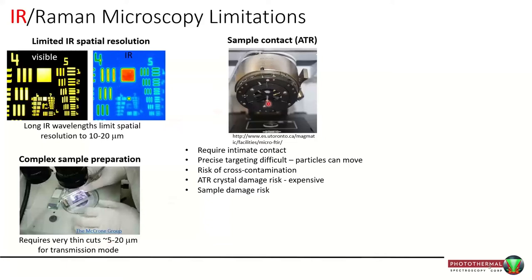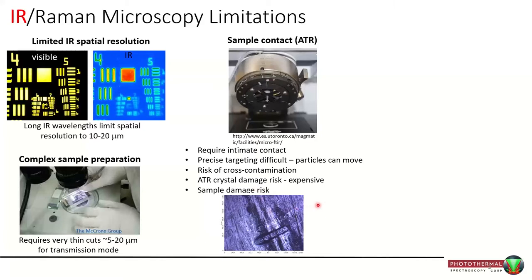The ATR accessory goes some way to addressing some of these issues, but it requires intimate contact, precise targeting is difficult, and if you have particles, touching them with the crystal can make them move. There's risk of cross-contamination as you move from point to point, risk of crystal damage — they can be easily scratched and are expensive to replace — and risk of sample damage or indentation, as you can see from the marks left as the ATR tip scans across.